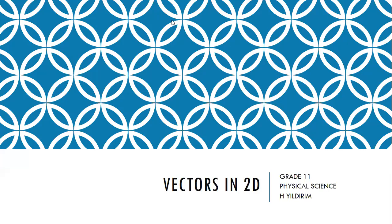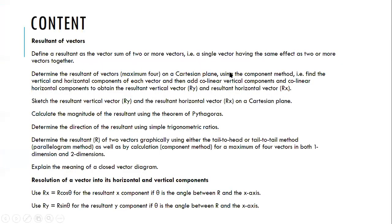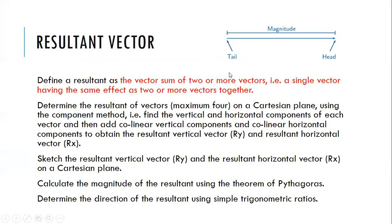Today we are going to carry on talking about vectors in two dimensions — that's a Grade 11 topic. We said we are going to be doing a revision. What we discussed in the previous class is what a resultant vector is: the vector sum of two or more vectors, or a single vector having the same effect as two or more vectors together when they act on an object.